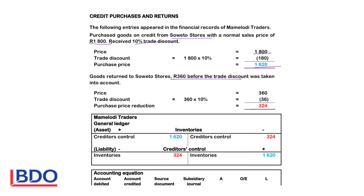In the general ledger, we will indicate that the inventory increased with $1,620, because assets increase on the debit side and decrease on the credit side. The creditors, which is a liability, increases on the credit side with $1,620. When we return the goods, we will indicate that we owe the creditors less money, so we will debit our creditors to reduce our debt. We return inventory so we have less inventory, therefore we credit the inventory.